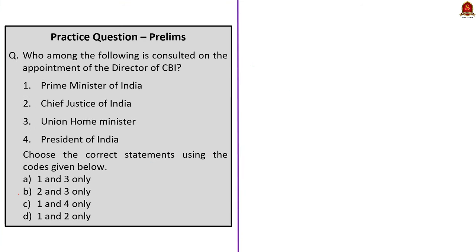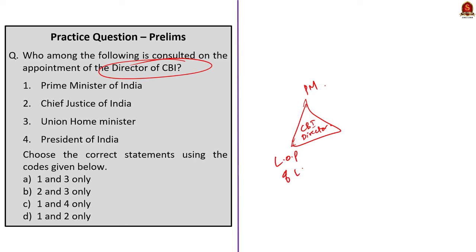Look at the final question of the day. Who among the following is consulted on the appointment of the Director of CBI? The director is appointed by the central government on the recommendation of a committee consisting of the Prime Minister as chairperson, the Leader of the Opposition in Lok Sabha, and the Chief Justice of India or a judge of the Supreme Court as nominated by the CJI. This does not include the Union Home Minister as a member. By eliminating options 3 and 4, the correct option is option D.